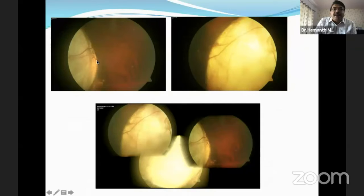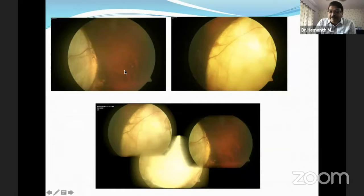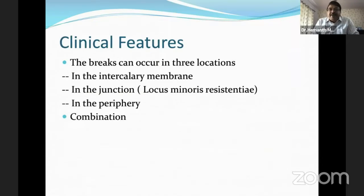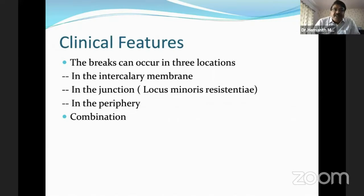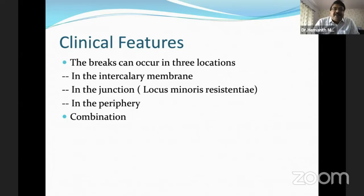The inner layers of the retina continue as the ICM, and this margin is the locus minoris. Breaks can occur in three locations: predominantly within the coloboma — in the intercalary membrane — or at the junction. There must be a communication to the subretinal space, so there can be a break in combination of the two, or there could be a break in the periphery. Retinal detachment from peripheral breaks is not unknown.